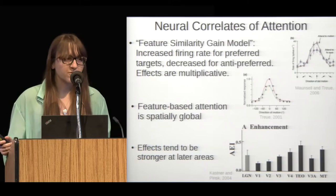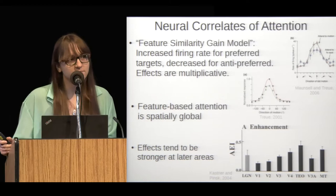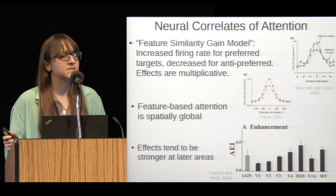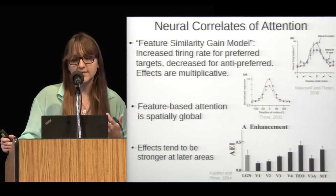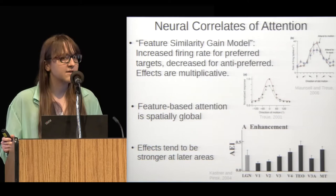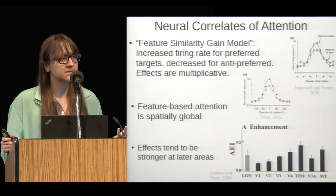Studies that record from neurons at the same time that these kinds of tasks are being performed have discovered many neural correlates of attention. The main one important for this work is called the feature similarity gain model of attention, which is a general theory that summarizes a lot of experimental findings. It basically says that neurons that prefer the features being attended will have their activity enhanced, whereas neurons that don't prefer the attended features will have their activity depressed.